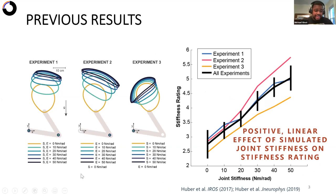So in a series of three experiments, where we either modulated both the shoulder and elbow stiffness, or just the elbow stiffness or just the shoulder stiffness, we found that subjects were able to increase their stiffness ratings with the simulated joint stiffness. So there's this positive linear effect of simulated joint stiffness on rating.